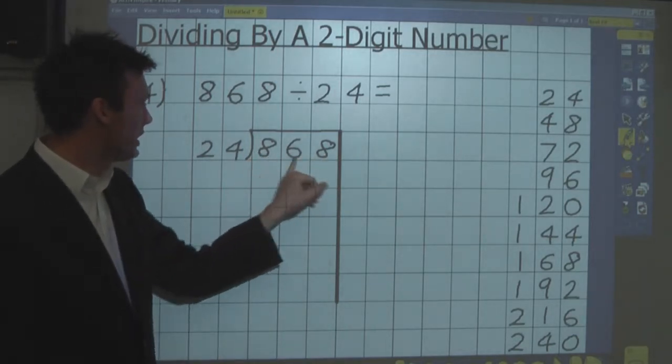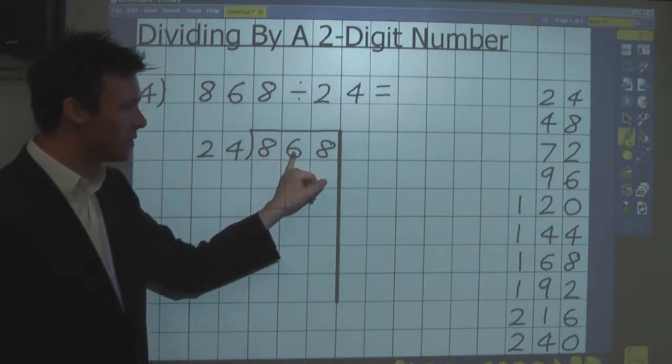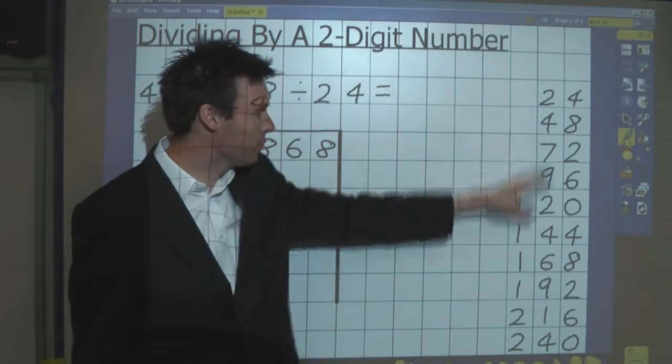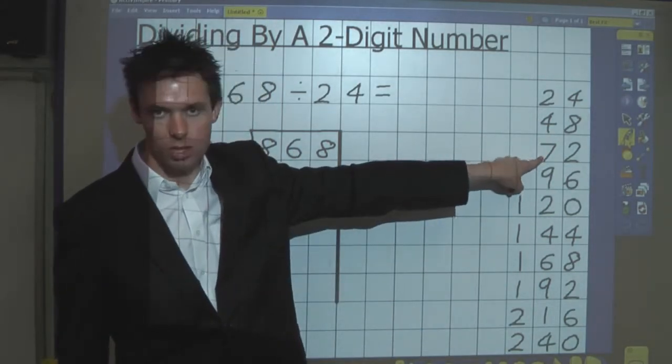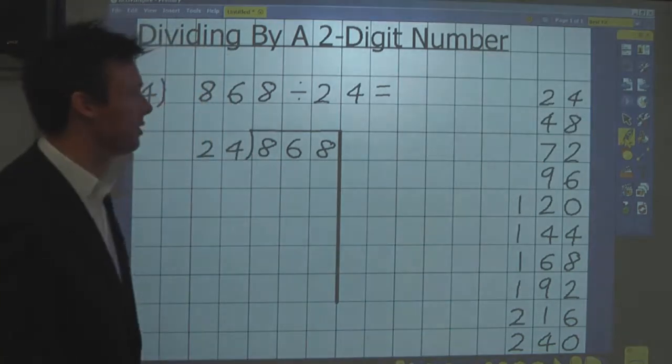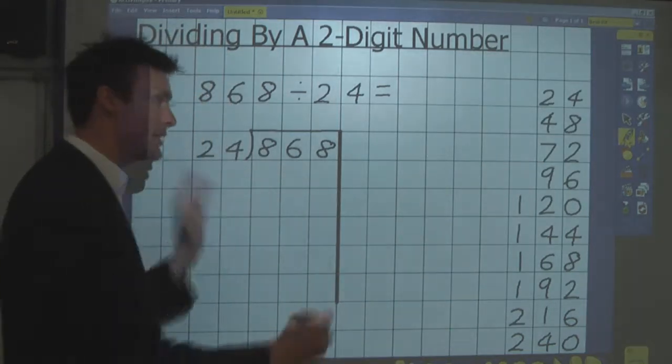So 868, if we just look at the first two digits, 86, we're looking for a number less than 86 in the 24 times table, 72. So therefore the first chunk we can take away isn't actually 72, but 720.